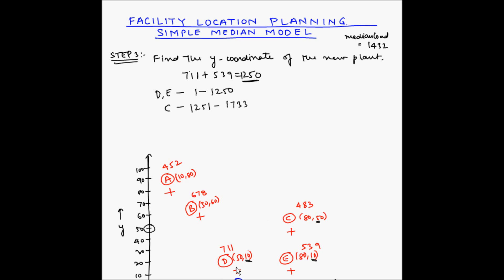So the new plant will be at coordinates (50, 50). Let me identify this new plant as NP with coordinates 50, 50. Next we have to find the total cost of transportation between all these facilities and the new plant, beginning with the distance between the new plant and each facility.